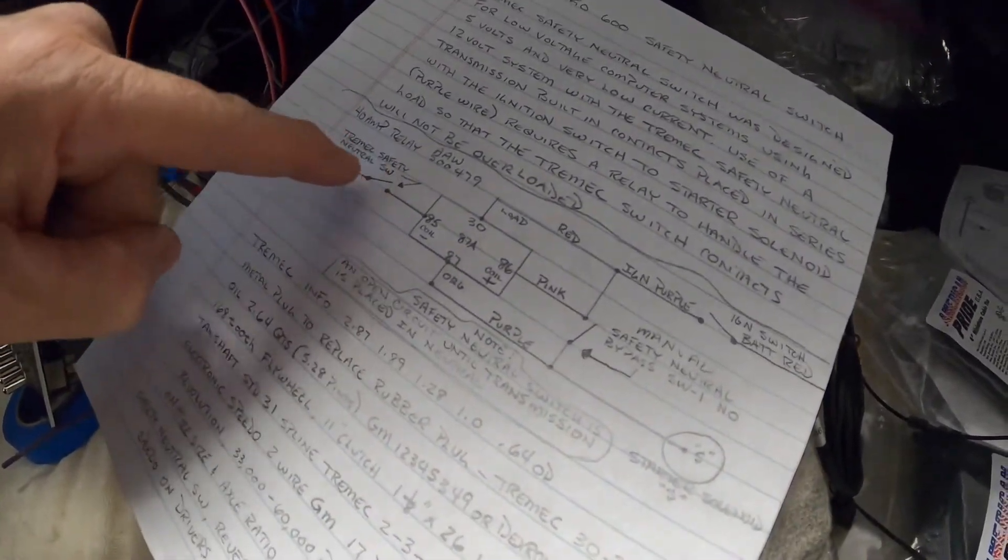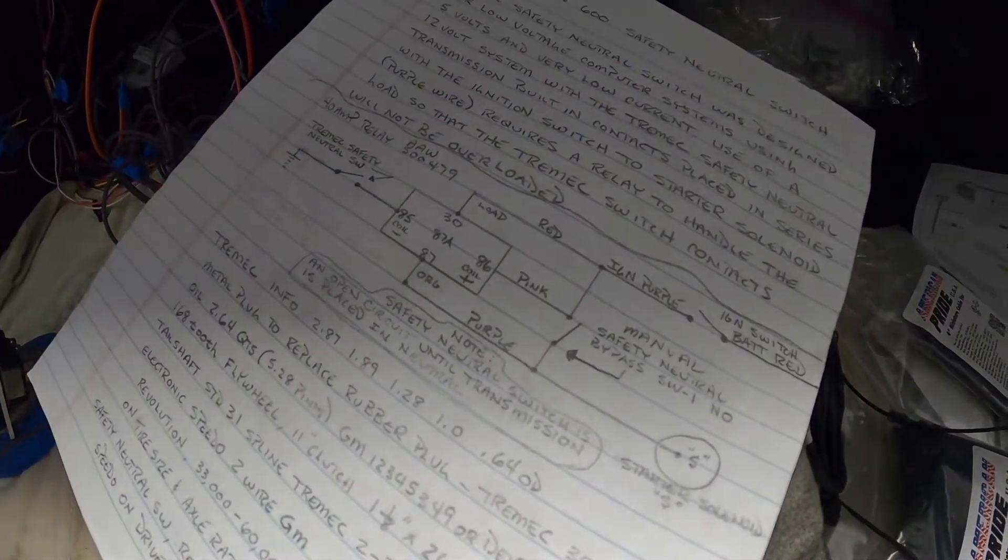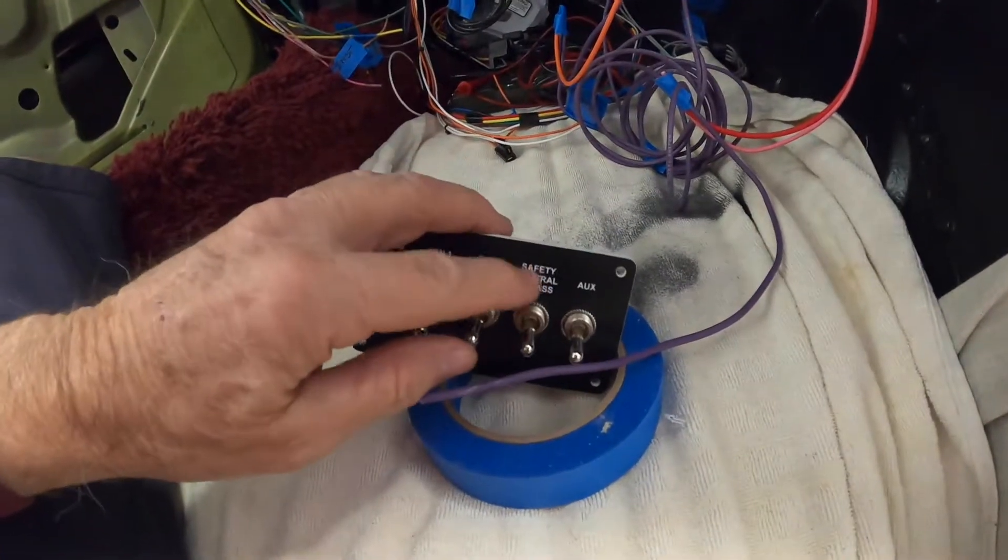Now, I was wondering what happens if the Tremec switch fails and the relay fails. You know, I don't want to have to crawl around the car and jump wires and do whatever to start the car. So I put in this safety neutral bypass switch, which is going to be right here.